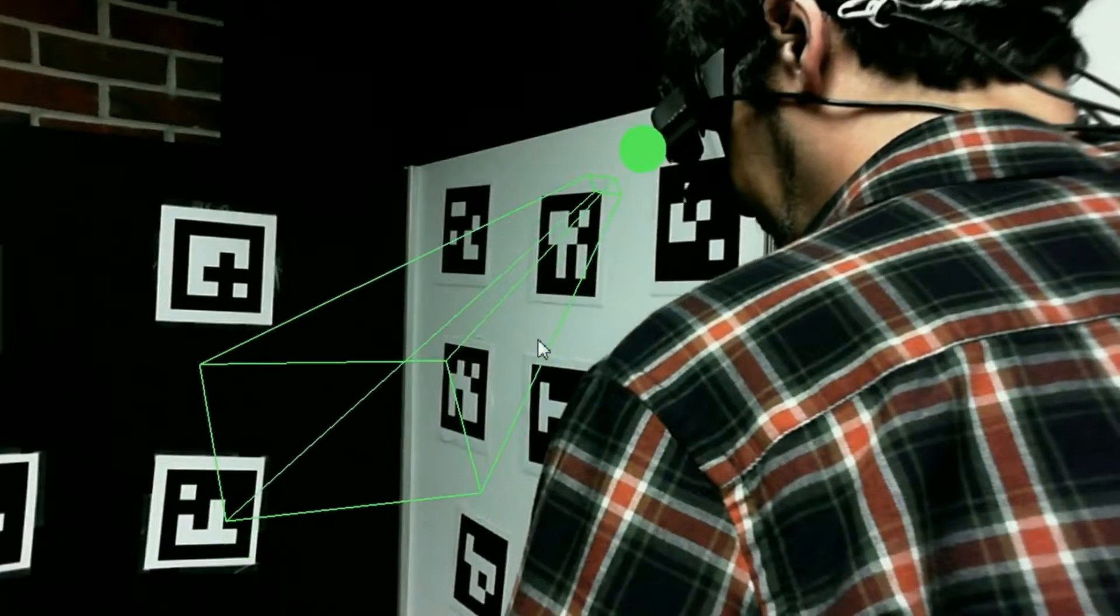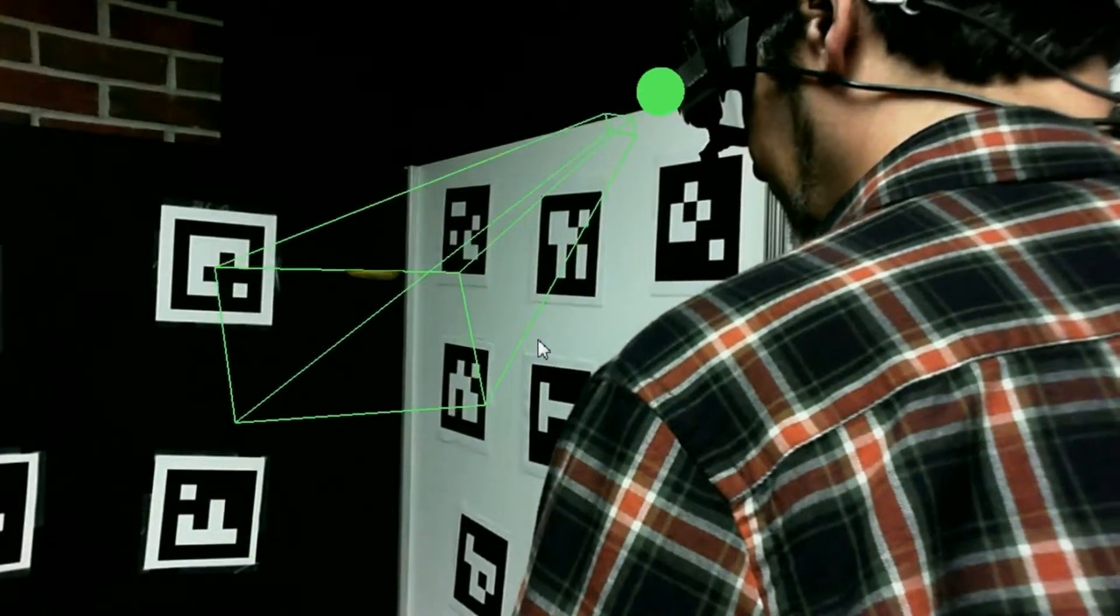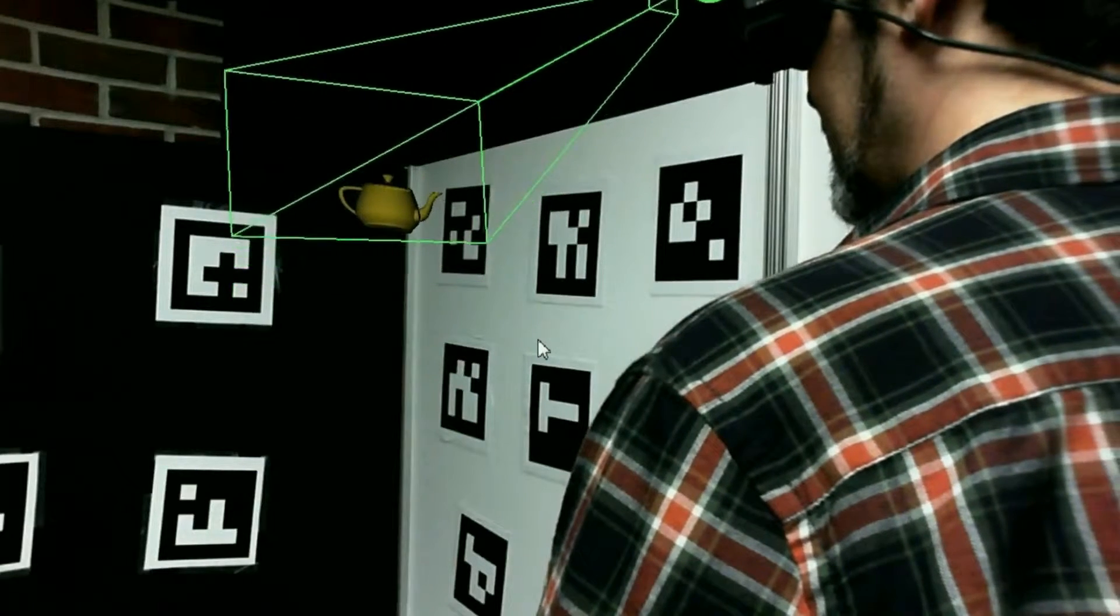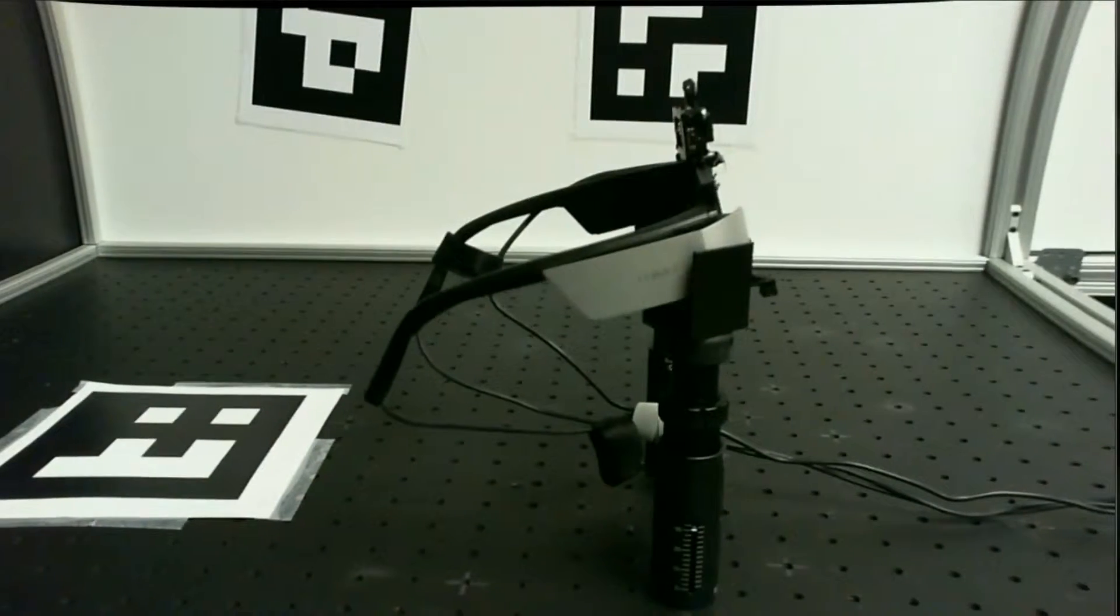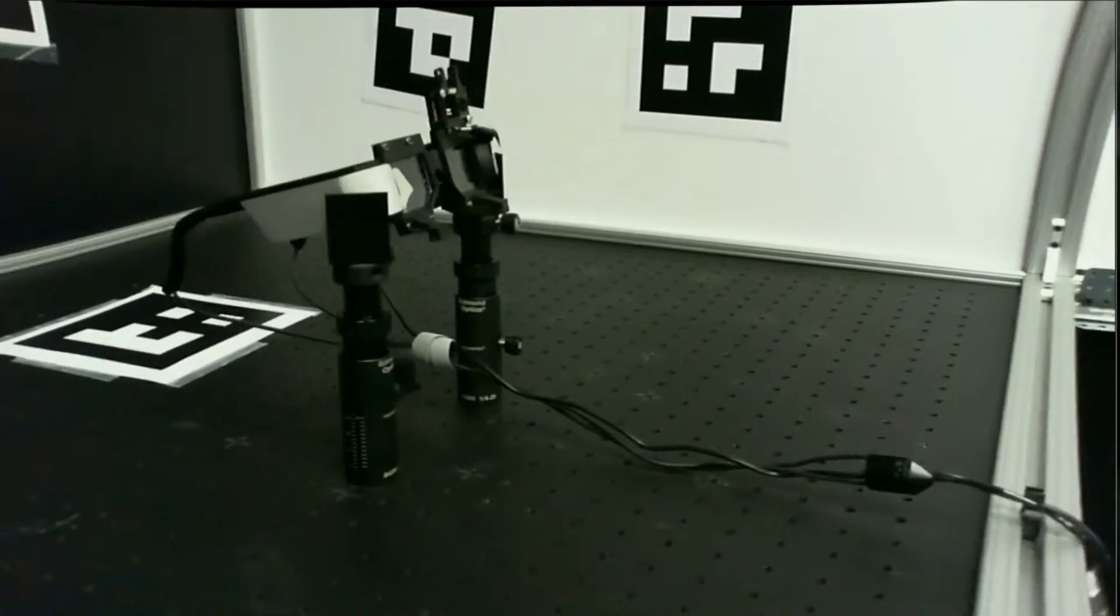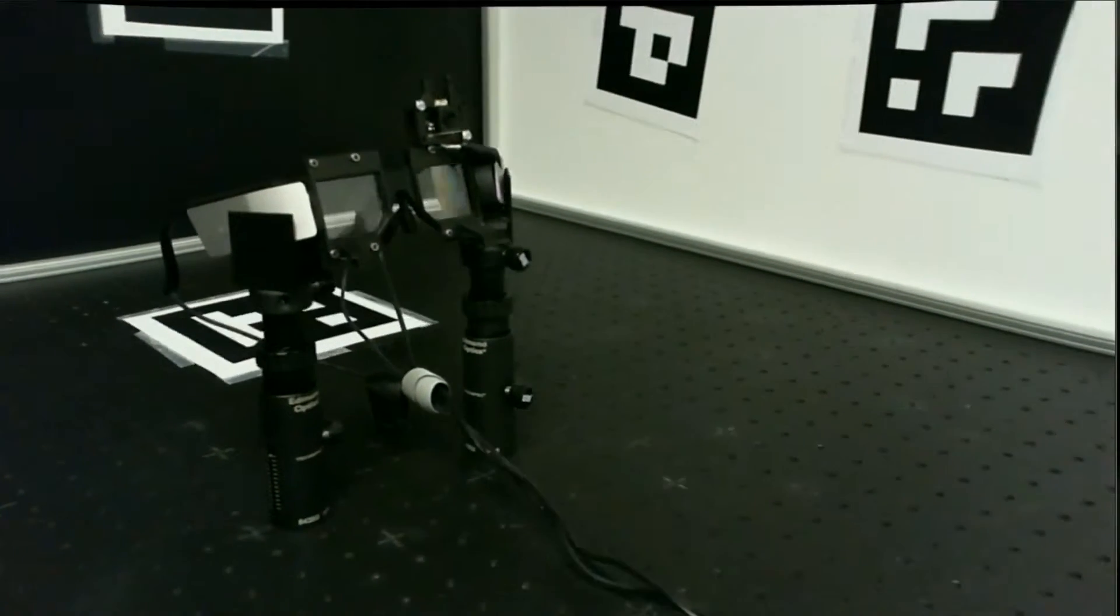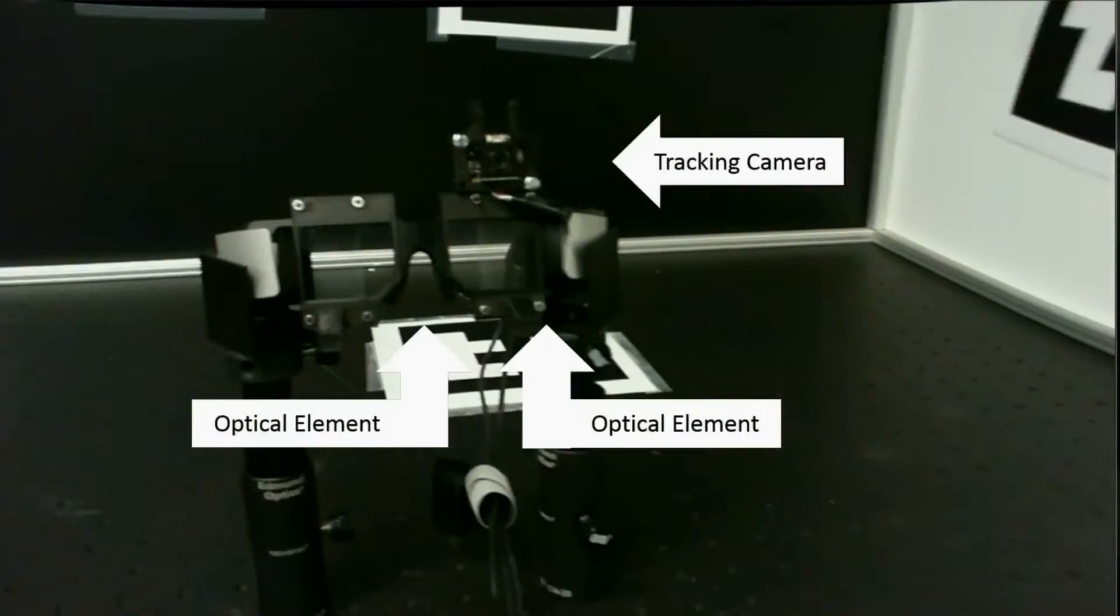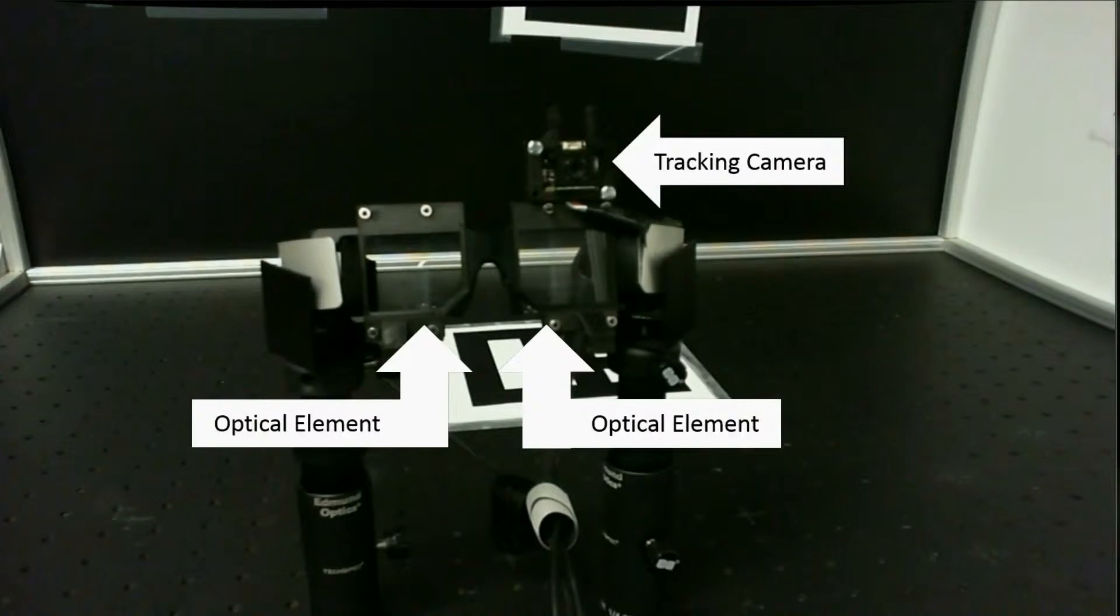In this video, we will be demonstrating how frustum visualization can be used to evaluate the calibration of an optical see-through head-mounted display. The see-through display we are using is the Lumis DK32 near-to-eye binocular display. We have attached a Microsoft LifeCam HD6000 camera to facilitate head tracking using a multi-marker fiducial array.